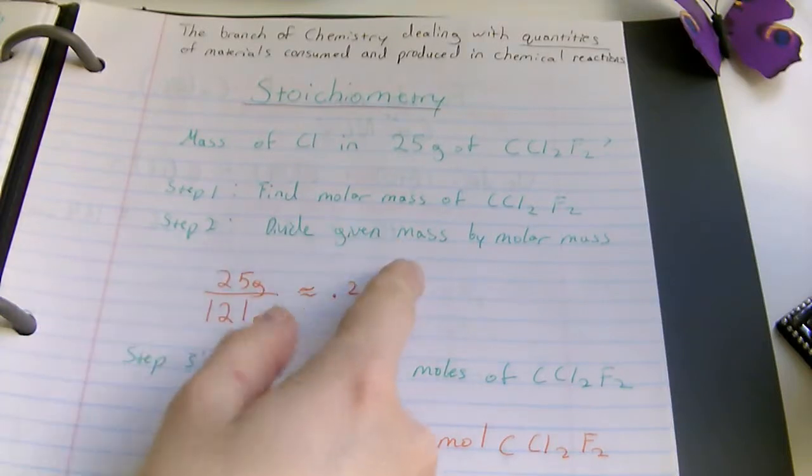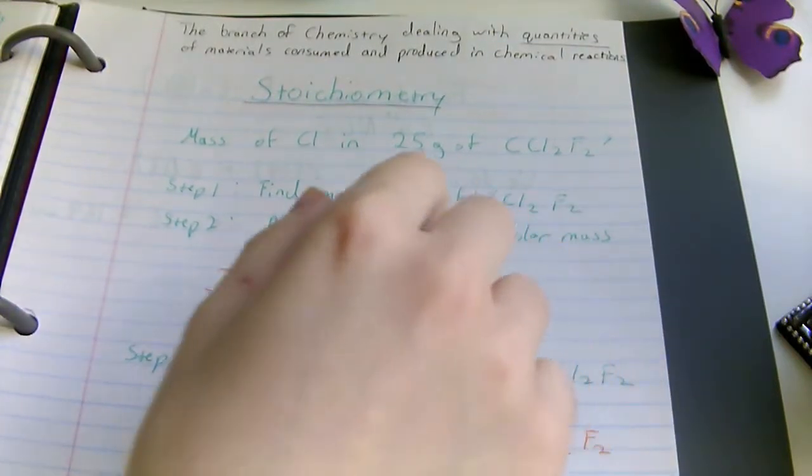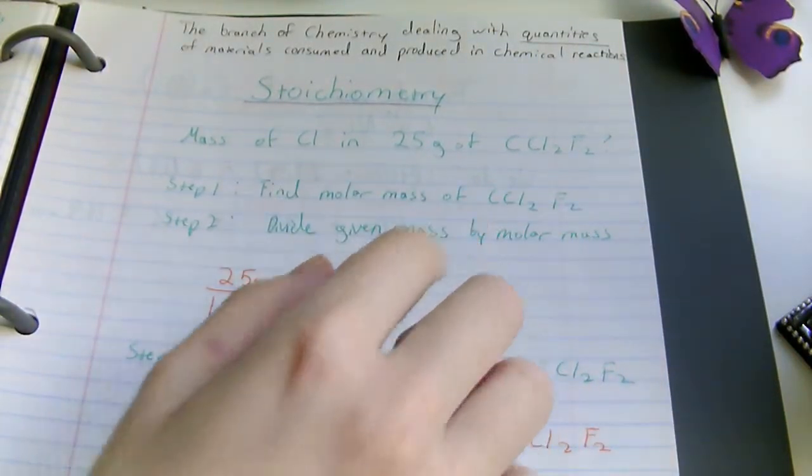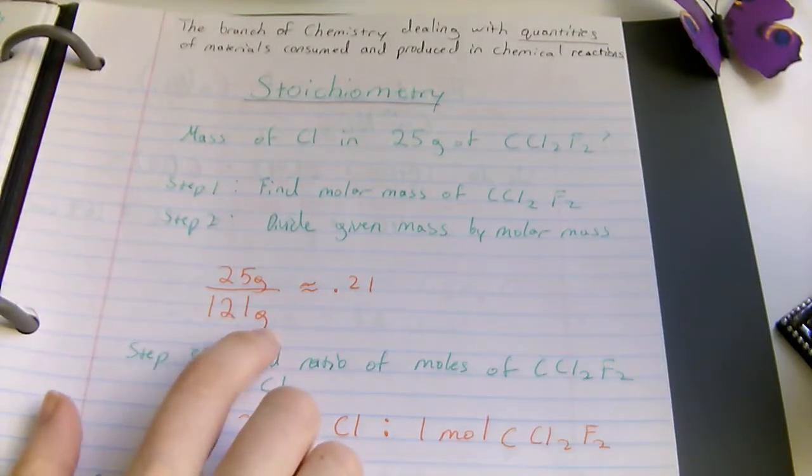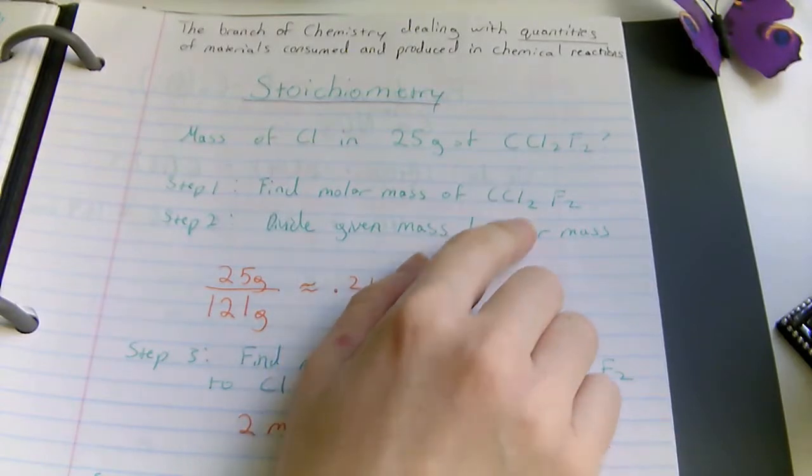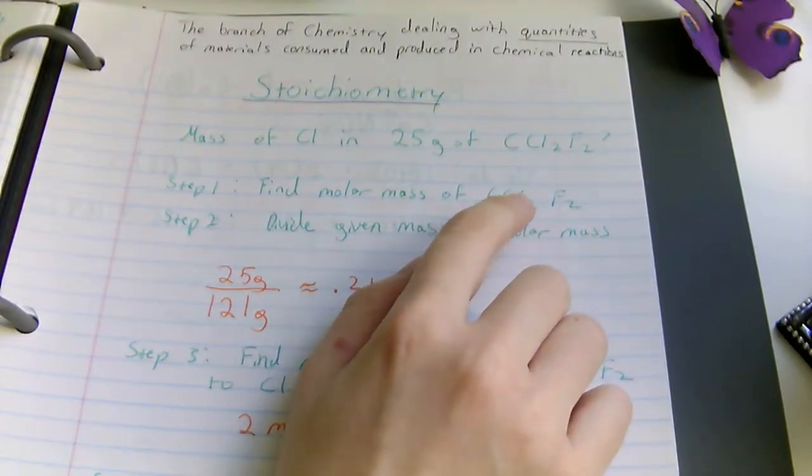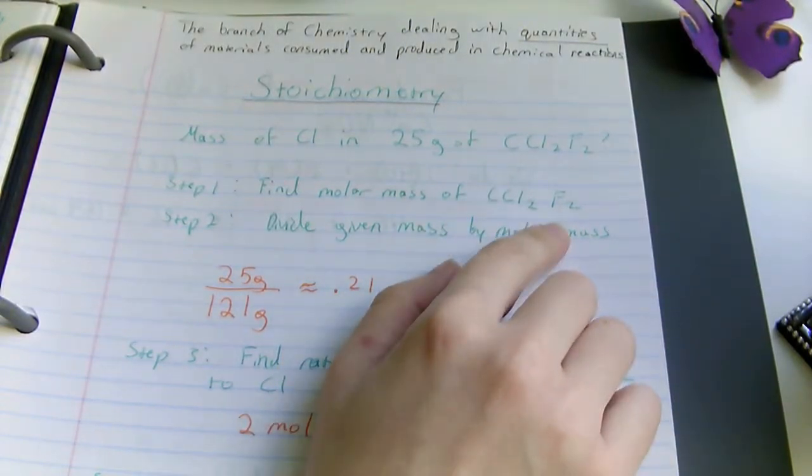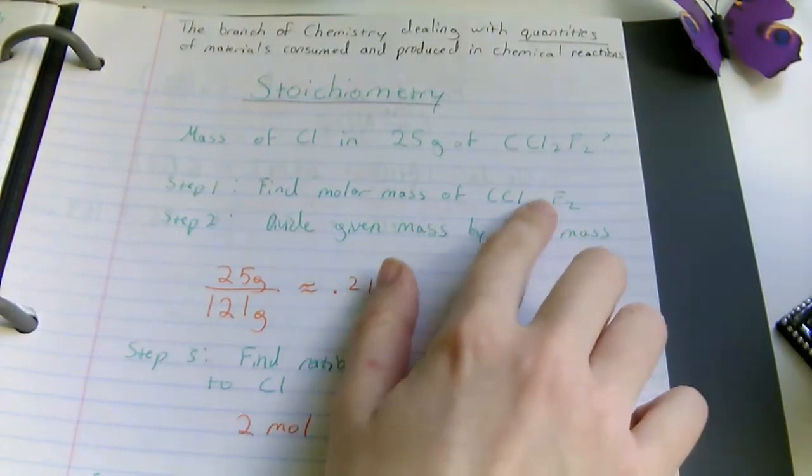Step one, find the molar mass of the whole thing, CCl2F2. Total mass is 121 grams, and I get this by adding the mass of carbon, 12, plus 2 times chlorine, which is 35, and 2 times fluoride, which is 19. I'm rounding here.